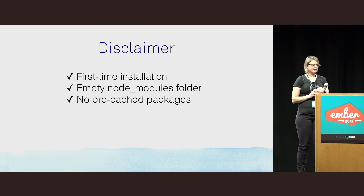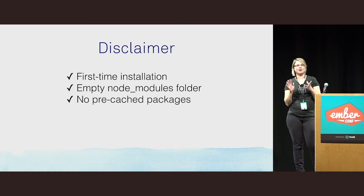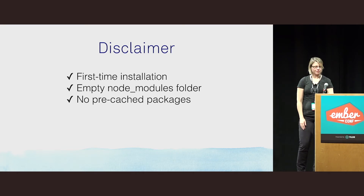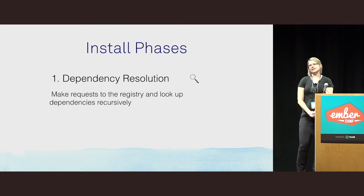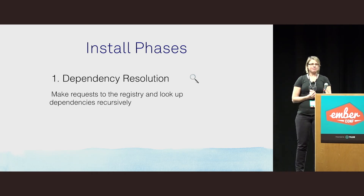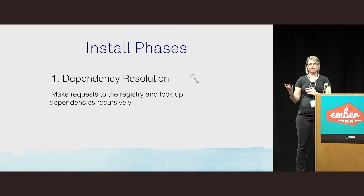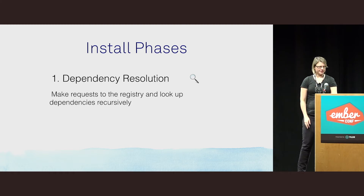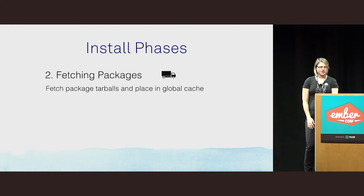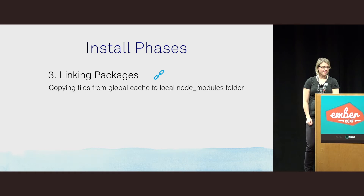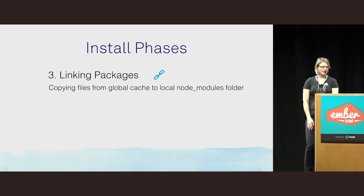For simplicity, we assume a first-time installation: no pre-cached packages and an empty node_modules folder. There are three phases in the install process. First, dependency resolution — this determines which packages are installed where, and we make requests to the registry recursively. Second, fetching packages in a compressed format and placing them in a global cache. Third, linking — copying files from the global cache into the local node_modules folder.